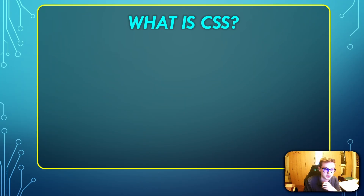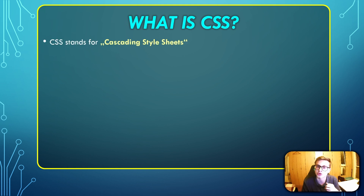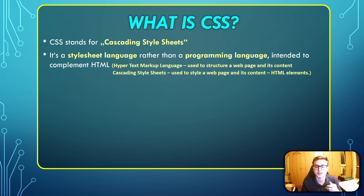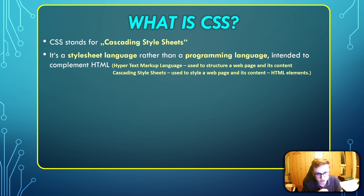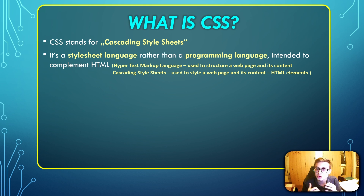If you've never heard of CSS before, CSS stands for Cascading Style Sheets. It's a style sheet language rather than a programming language, intended to complement HTML. HTML, or Hypertext Markup Language, is used to structure a web page and its content, and then Cascading Style Sheets is used to style a web page and its content. So basically, it's used to style HTML elements.